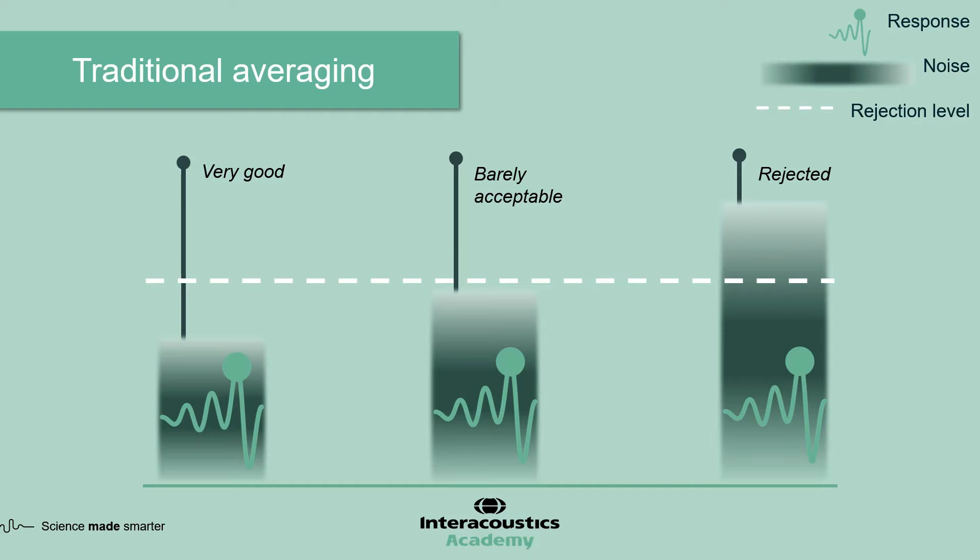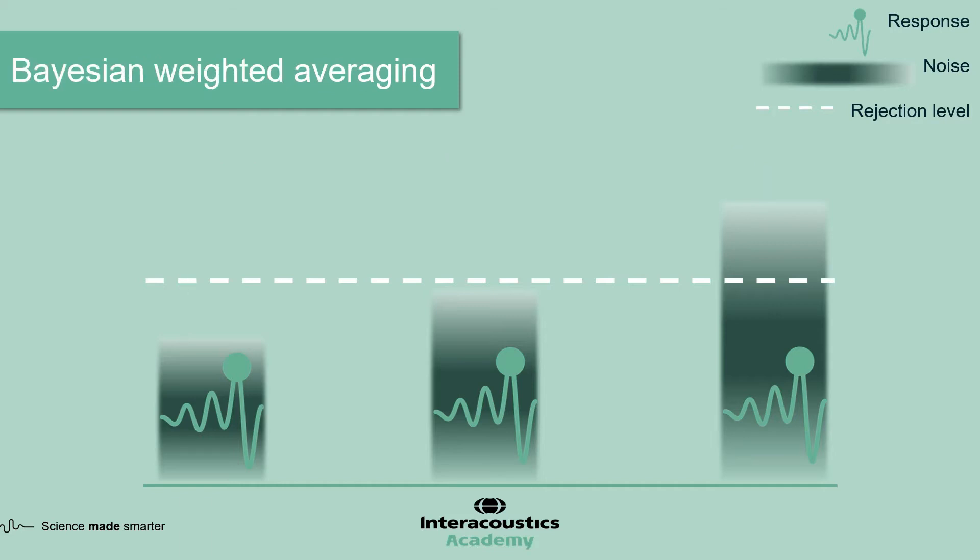In this scenario, all of the sweeps are being treated equally. In Bayesian weighted averaging, things work a bit differently.